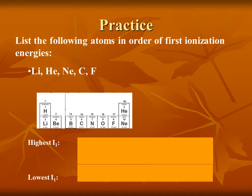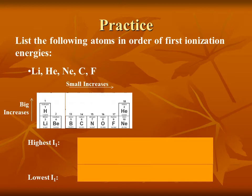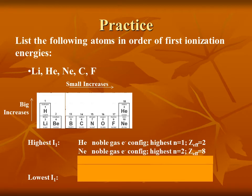Practice: list the following atoms in order of first ionization energies — lithium, helium, neon, carbon, and fluorine. First, remember the periodic trends: you get big increases moving upward and smaller increases moving to the right. The atom that is most upward and most to the right should have the highest first ionization energy. Not surprisingly, those are helium and neon. Then you work backwards from there — next to neon is fluorine, which will have the next highest ionization energy.